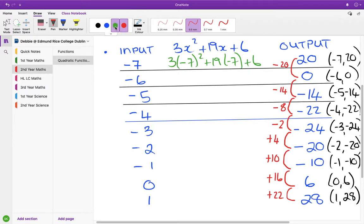So the first differences, they're not constant, which we would expect. So we look at the second differences. So from minus 20 to minus 14, that's plus 6. Minus 14 to minus 8 is plus 6. Minus 8 to minus 2 is plus 6.